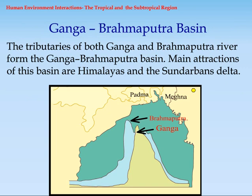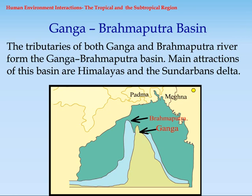Ganga-Brahmaputra Basin. The tributaries of both Ganga and Brahmaputra River form the Ganga-Brahmaputra Basin. Main attractions of this basin are the Himalayas and the Sundarbans Delta.